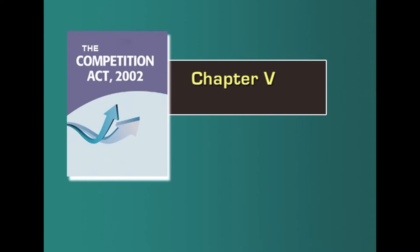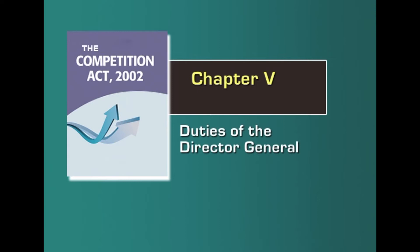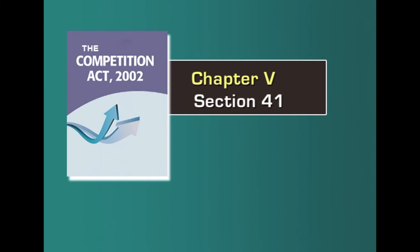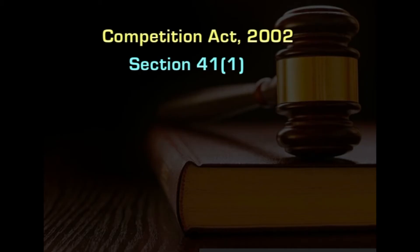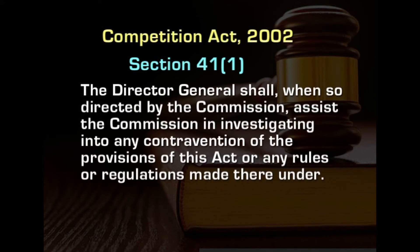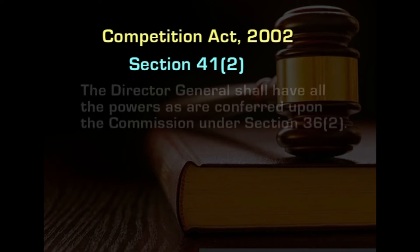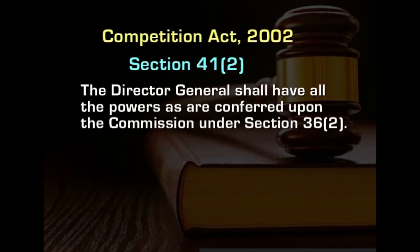With that, we will move on to the next chapter which talks about duties of the director general. This chapter has only one section dealing with duties of the director general. Section 41 deals with the director general to investigate contravention. The director general shall, when directed by the commission, assist the commission in investigating into any contravention of the provisions of this act or any rules or regulations made thereunder. Under subsection 2 of section 41, the director general is conferred all powers as conferred upon the commission under subsection 2 of section 36, which we just discussed.